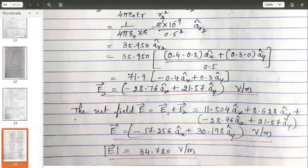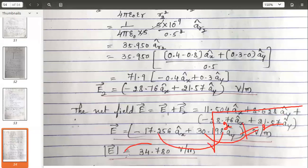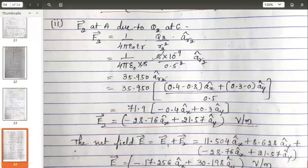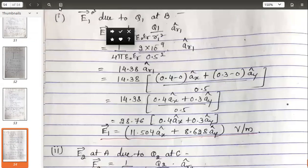Suppose if the question is to find the magnitude of the field, you take one more step further. Take the square root of the first coefficient squared plus second coefficient squared, you will get the magnitude of the field. Any doubts in this problem? Please ask me. You can unmute and question or put it in the chat box.